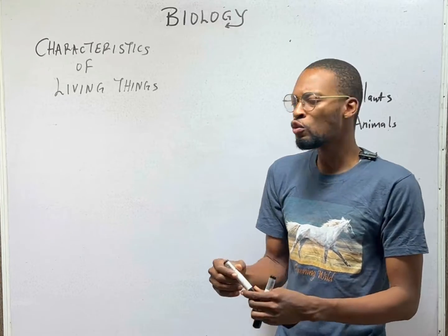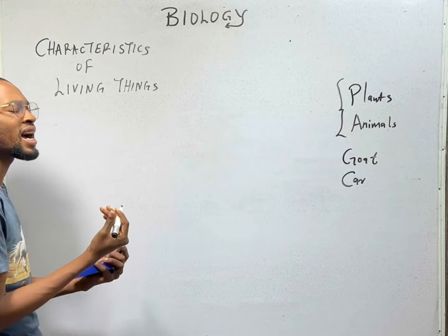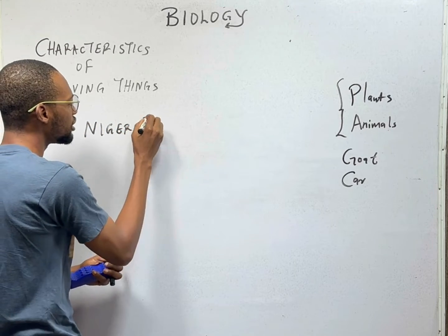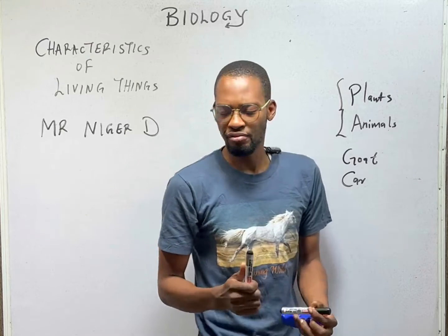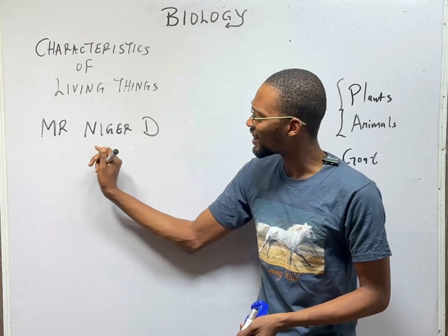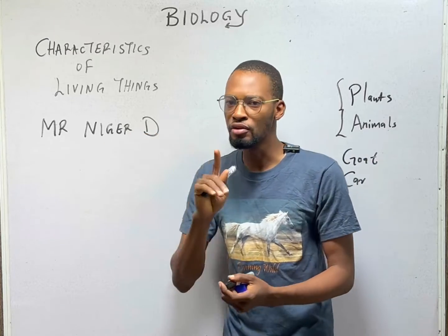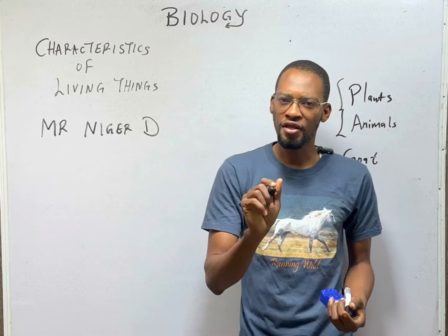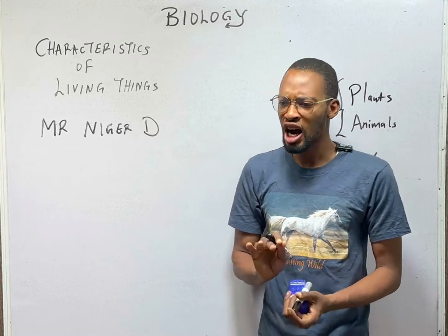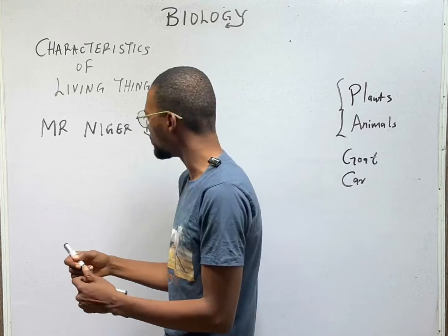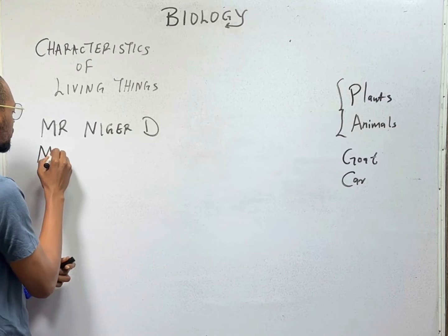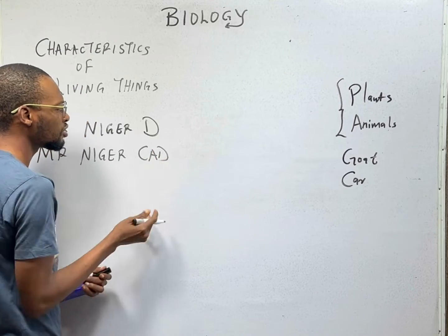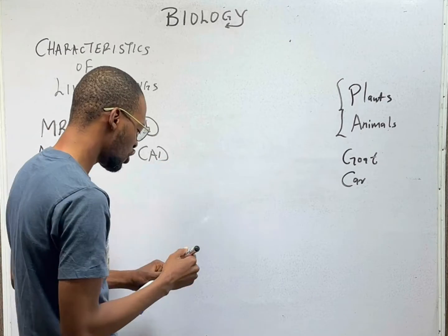Back in the days, we found that the characteristics of living things can be memorized with the word MR NIGEL D, where M is movement, R is respiration, N is nutrition, I is irritability, G is growth, E is excretion, R is reproduction, and D is death. However, in the modern days, we prefer to use the updated word MR NIGEL CAD — so instead of D, we use CAD, C-A-D.